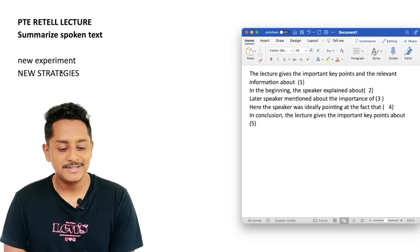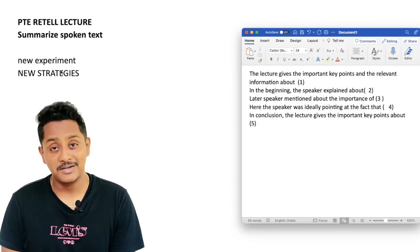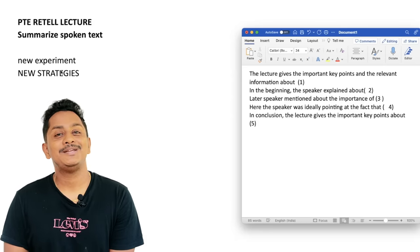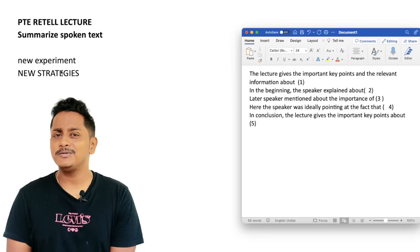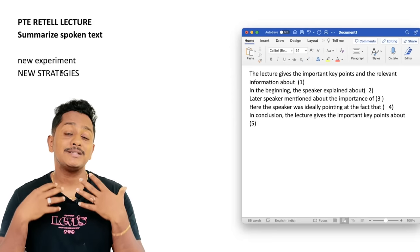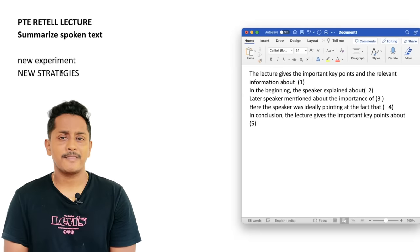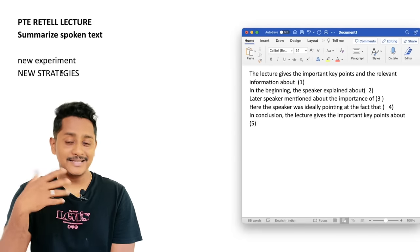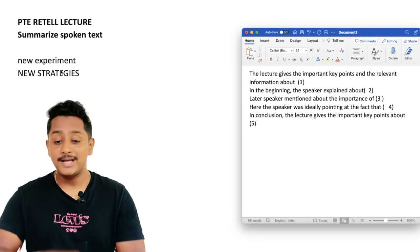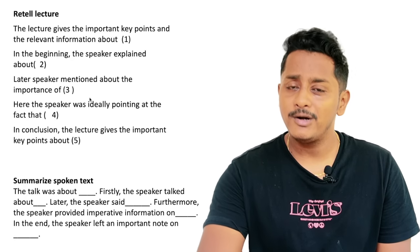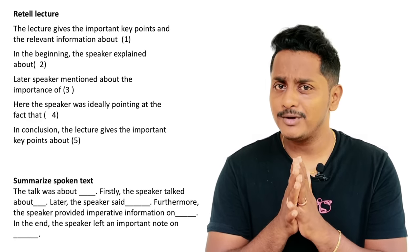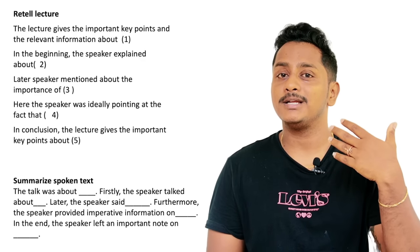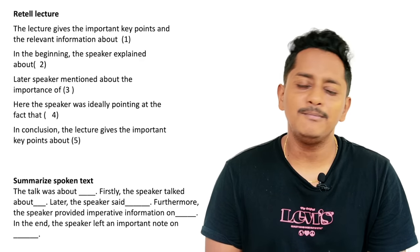Let me share my screen — Retell Lecture and Summarize Spoken Text: new experiment, new strategies. A student of mine was not following our strategy; they were using methods from somewhere else, because of which their listening and writing scores were always low. We did an experiment to see if that particular method was causing the problem, and after fixing it the person got 90 overall.